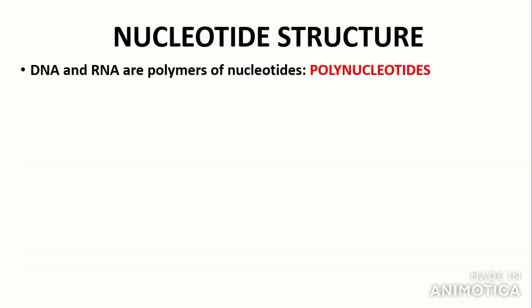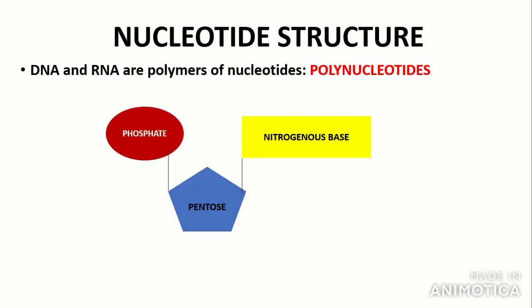The next thing you need to know is about the structure of a nucleotide. A nucleotide is the monomer that DNA and RNA are made of, so DNA and RNA are polymers of nucleotides, called polynucleotides. A nucleotide consists of a phosphate group, a pentose sugar — pentose means a five-carbon sugar — and in DNA this is deoxyribose, hence deoxyribonucleic acid. In RNA it's just ribose. You need to know that DNA has deoxyribose and RNA has ribose.